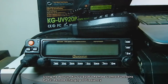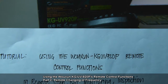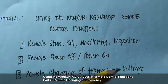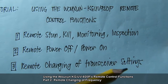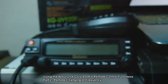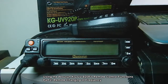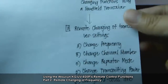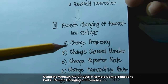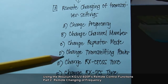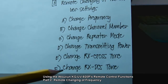To continue with the tutorial demonstration about using the Ushun KG-UV920P's remote control function, I will be covering remote changing of the transceiver settings. One of the settings you could remotely change is the frequency. You could also change the channel number, change the repeater mode, change the transmitting power, change the reception CTCS tone, or change the RXTCS tone.